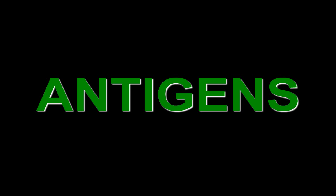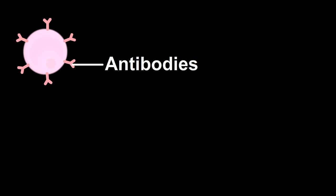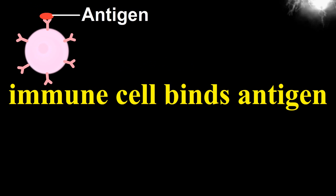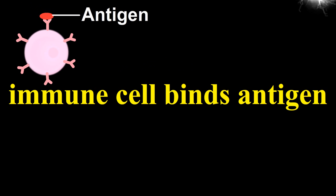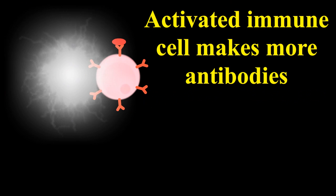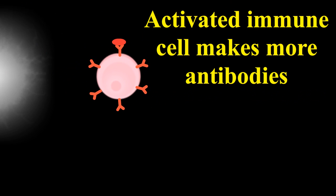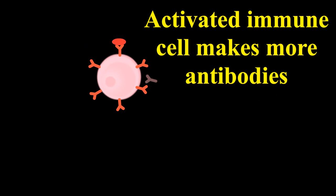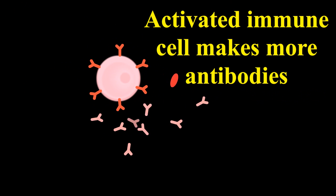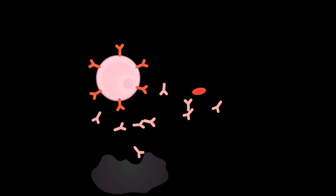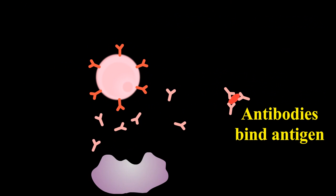What are antigens? An antigen is a substance that stimulates the immune system. This substance can be a part of a living organism — such as a bacterium or parasite — but can also be a virus or a chemical toxin.